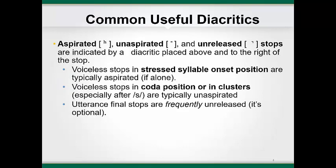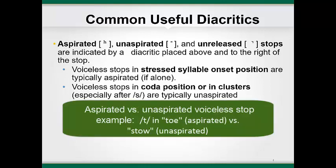Now we will cover three stop diacritics. In English, the first two will be used only with voiceless stops; the third can be used with voiced or voiceless stops. We have already begun to transcribe some allophones of T and D when we learned about the glottal stop, which can be an allophone of T, and the alveolar flap, which can be an allophone of either T or D. Now we will learn to transcribe additional allophones common across all voiceless stops. Let's discuss aspirated versus unaspirated voiceless stops.